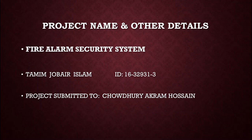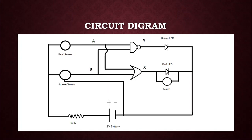Now let's see the circuit diagram. Here is the circuit diagram where you can see one heat sensor, one smoke sensor, one 10k resistor, one 9-volt battery, one OR gate, one NAND gate, one green LED, one red LED, and one buzzer alarm.